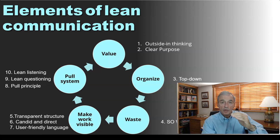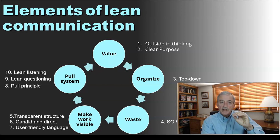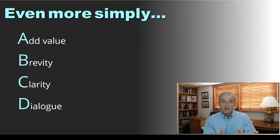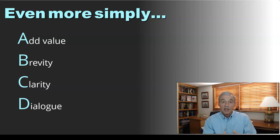To make it even simpler, let's think about A, B, C, D. A is for add value — that's the first section. B is for brevity. C is for clarity. And D is for dialogue.